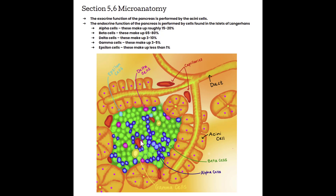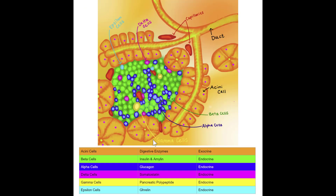The other thing we'll see in the islets of Langerhans are a multitude of capillaries — lots of capillaries to grab those hormones and bring them out into the body for circulation. Remember: acinar cells are connected to the ducts and are responsible for digestive enzymes as part of the exocrine system. All the other cells are found in the islets of Langerhans and are responsible for endocrine function. We'll go over this in more detail in the physiology portion.